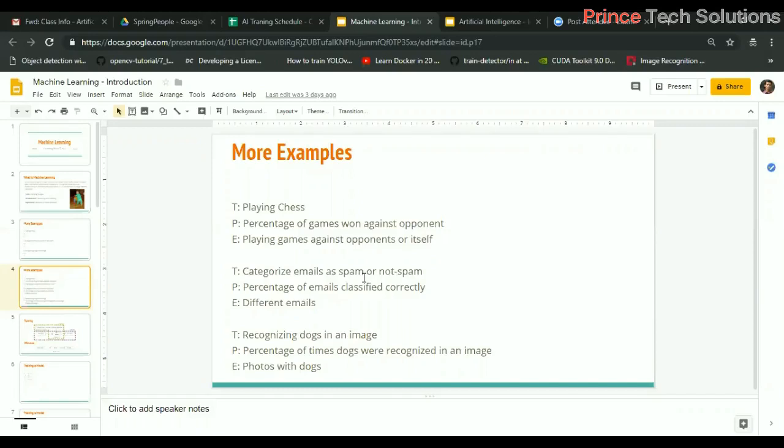With respect to deep learning, recognizing a dog in an image is the task. The performance is the percentage of times dogs were recognized in an image. The experience is the number of photos with dogs - the types of dogs we can give in different photos. The machine tries to learn with the help of that and recognizes the dog accurately. This is the basics of machine learning.